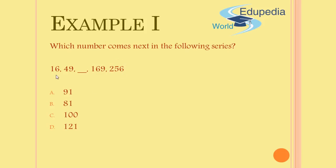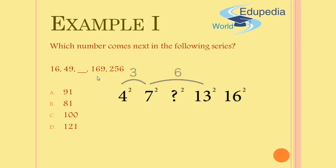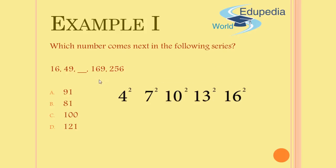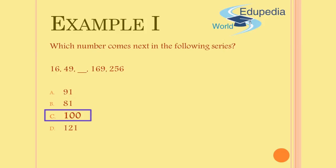The difference between 4 squared and 7 squared is a jump of 3, then from 7 to 13 is a jump of 6, and from 13 squared to 16 squared is again a jump of 3. The jump of 6 is justified because we are skipping the blank. So the pattern is 4², 7², 10², 13², 16² — increasing by 3 each time. The blank should be 10 squared, and since the square of 10 is 100, the correct answer is option C: 100.